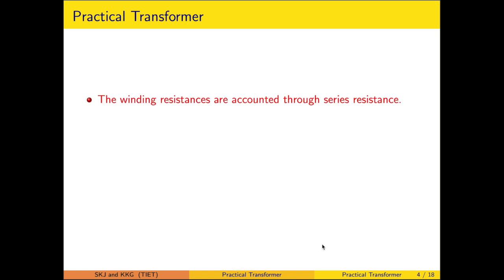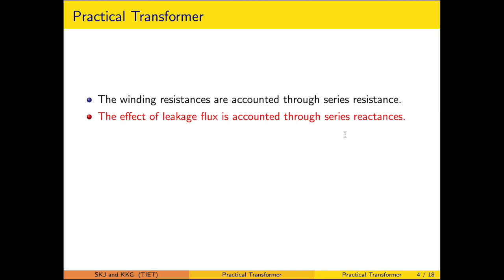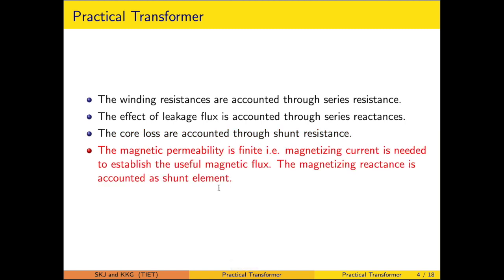The first consideration is that winding resistances are accounted through a series resistance. The effect of leakage flux is accounted through a series reactance. Core losses — including both eddy current and hysteresis loss — are accounted through a shunt resistance. Magnetic permeability is considered finite, giving rise to a finite magnetizing current to establish the flux. Manufacturing practices are adopted to keep the effect of these practical considerations limited or minimized to improve performance.